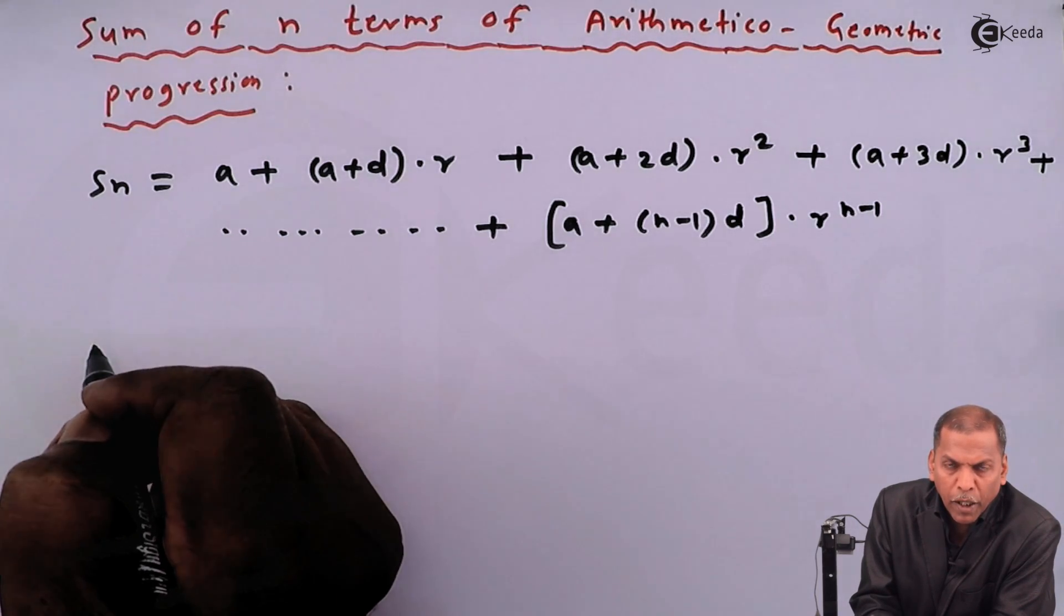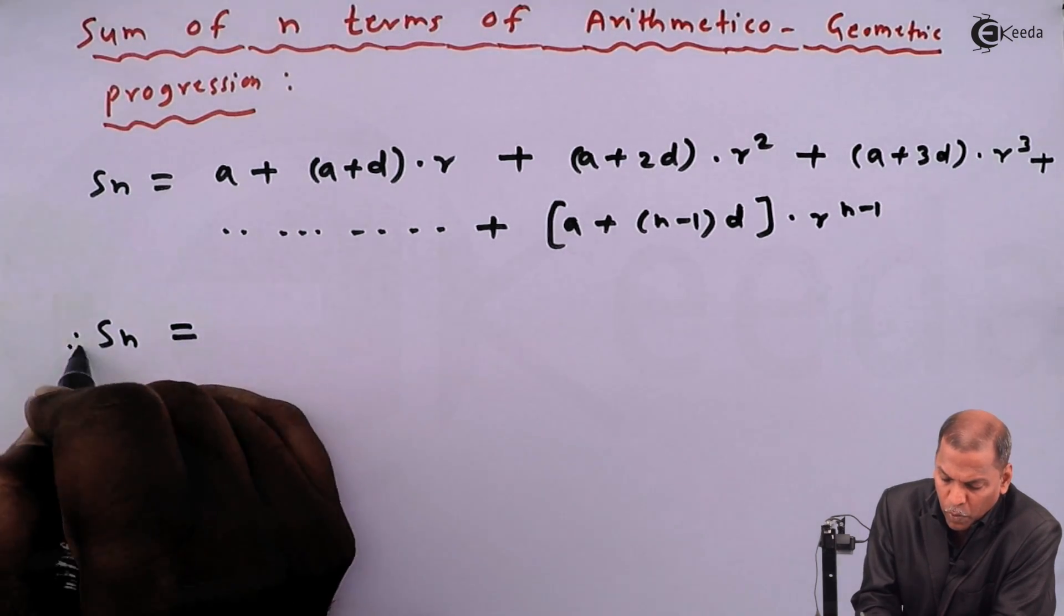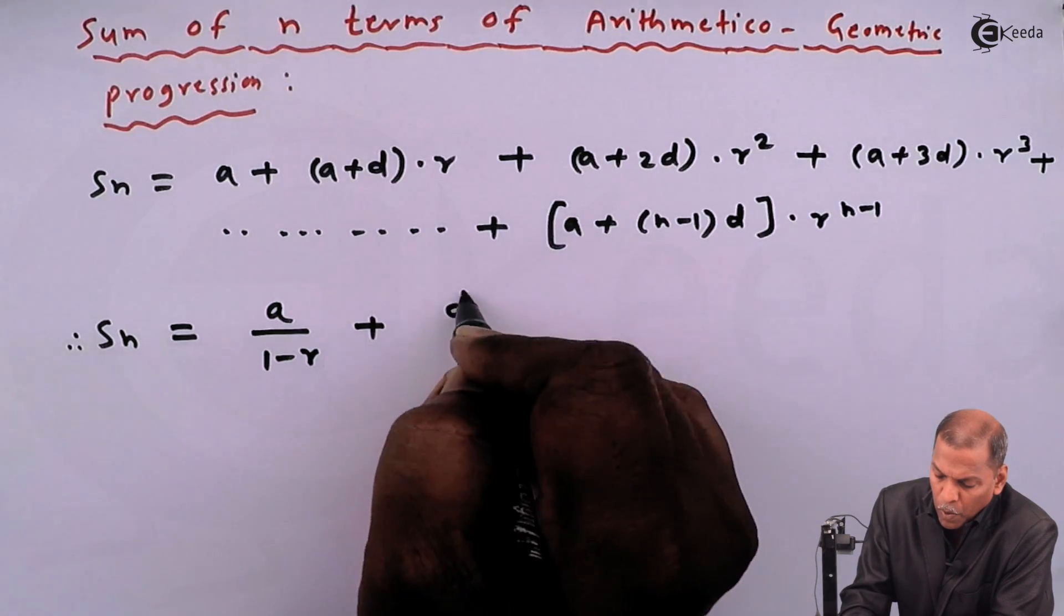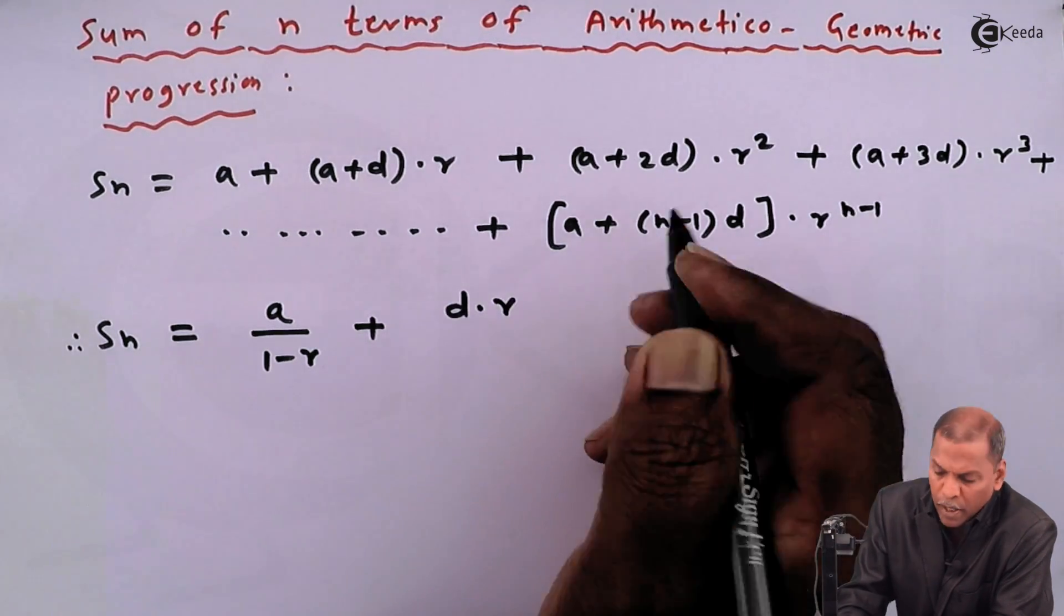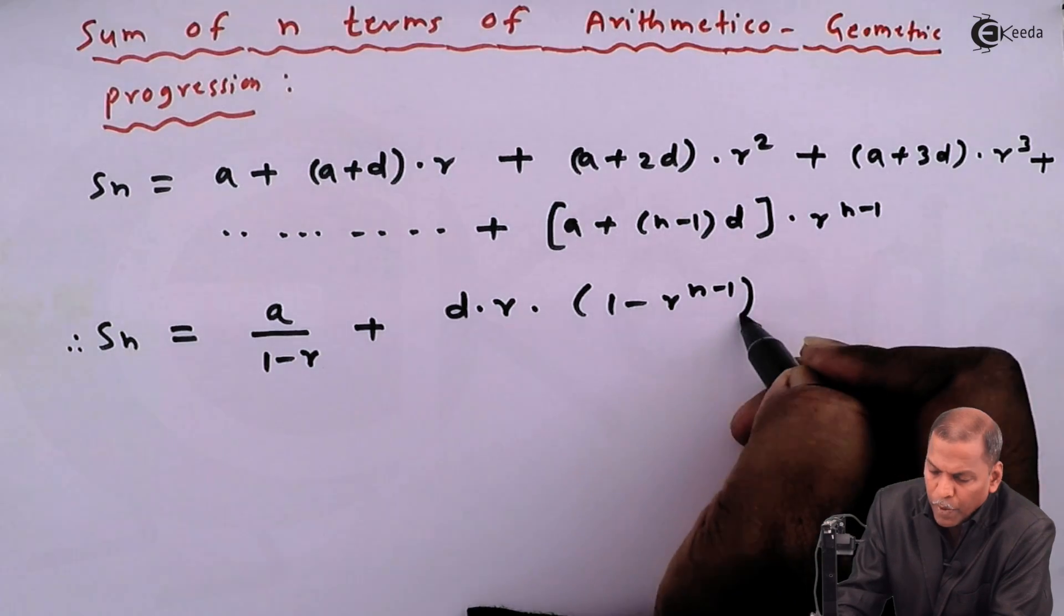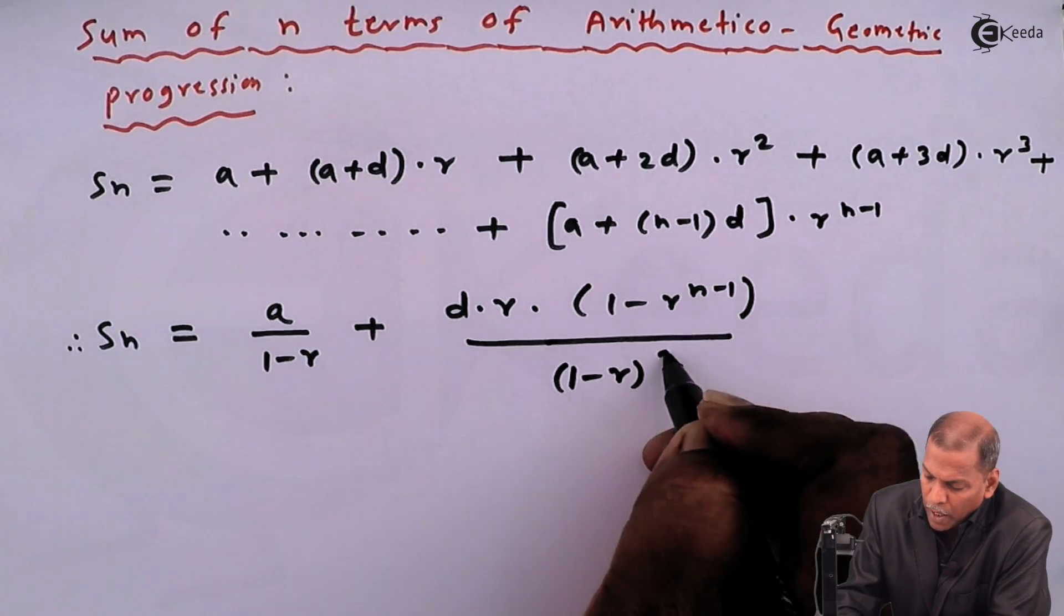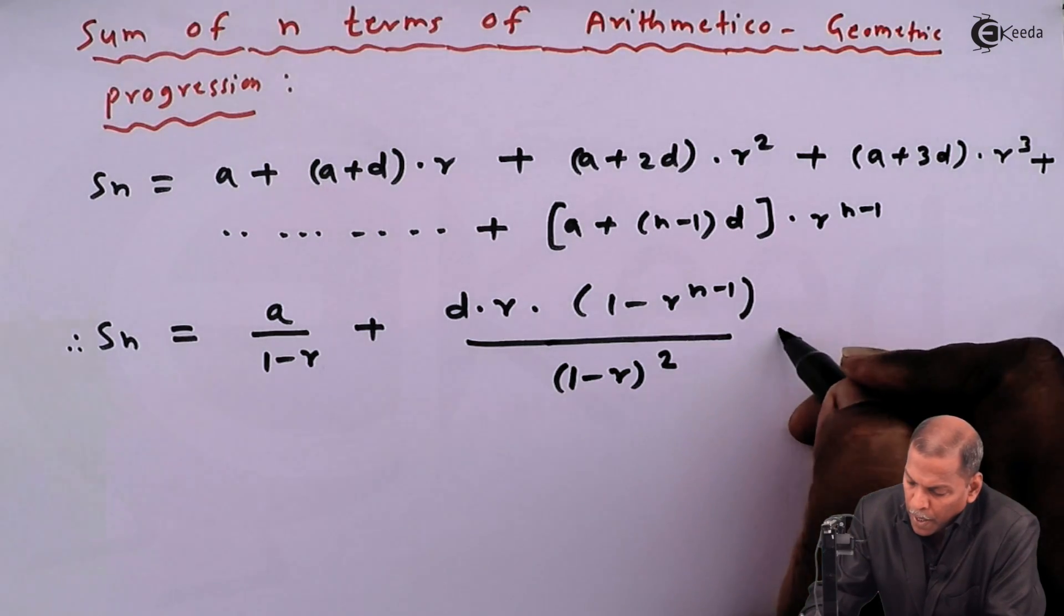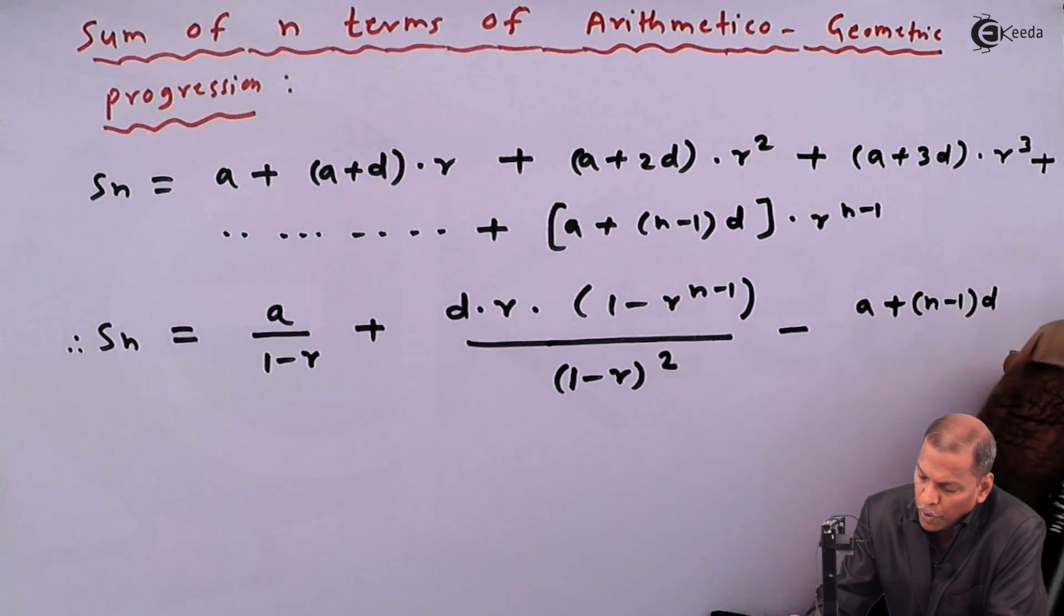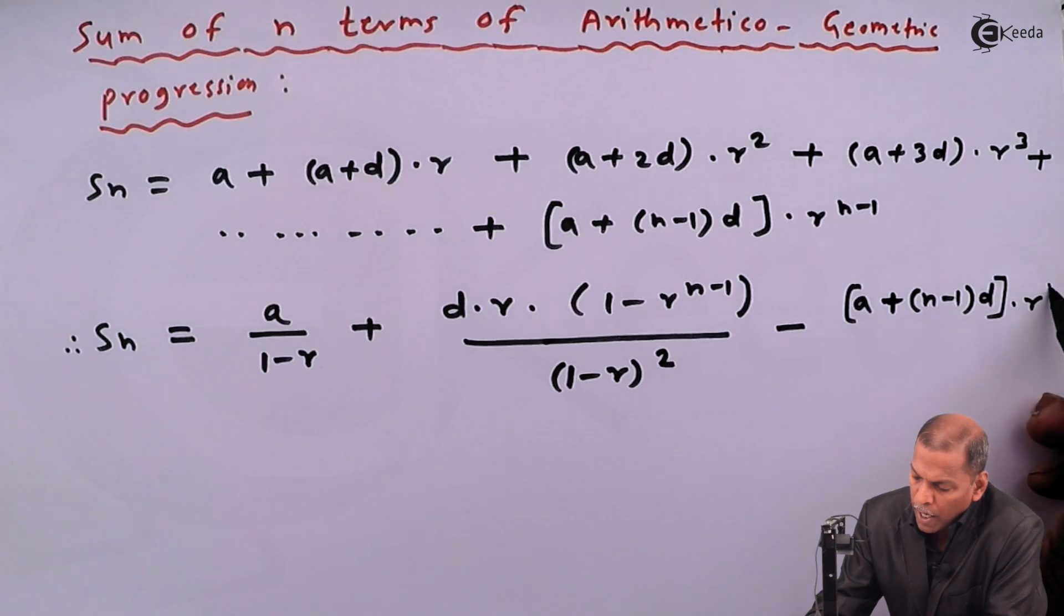Which can be written in terms of formula as Sn is equal to a/(1-r) plus d·r·(1-r^(n-1))/(1-r)² minus [a+(n-1)d]·r^n